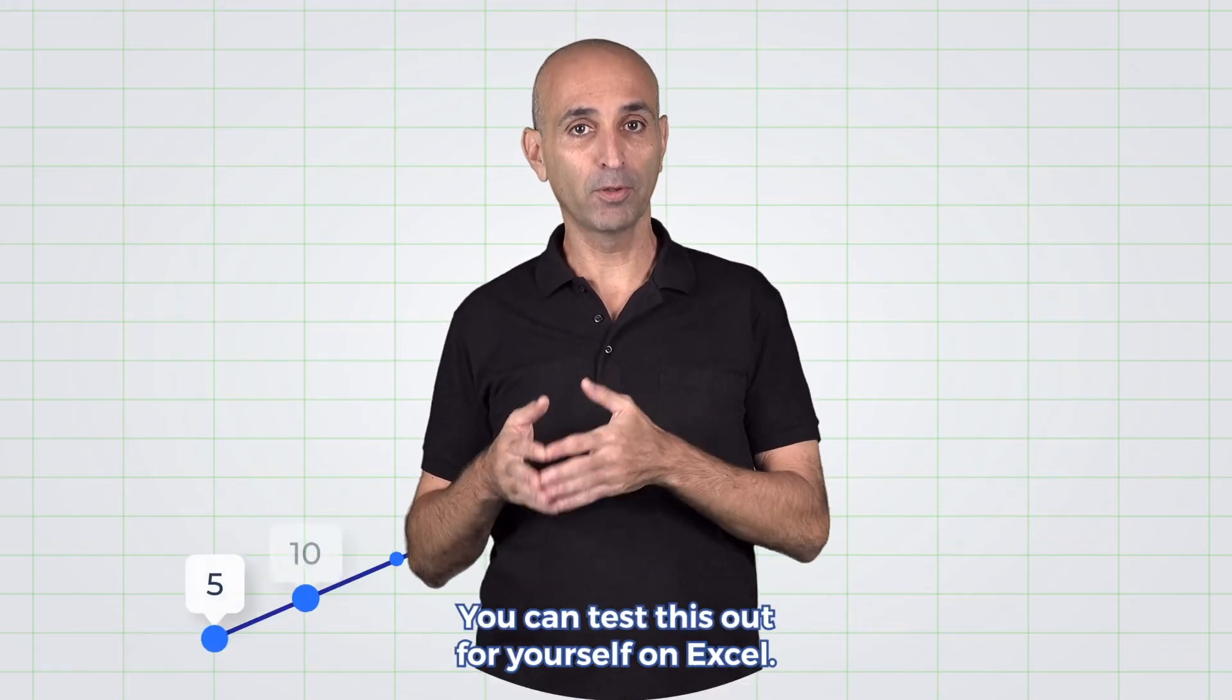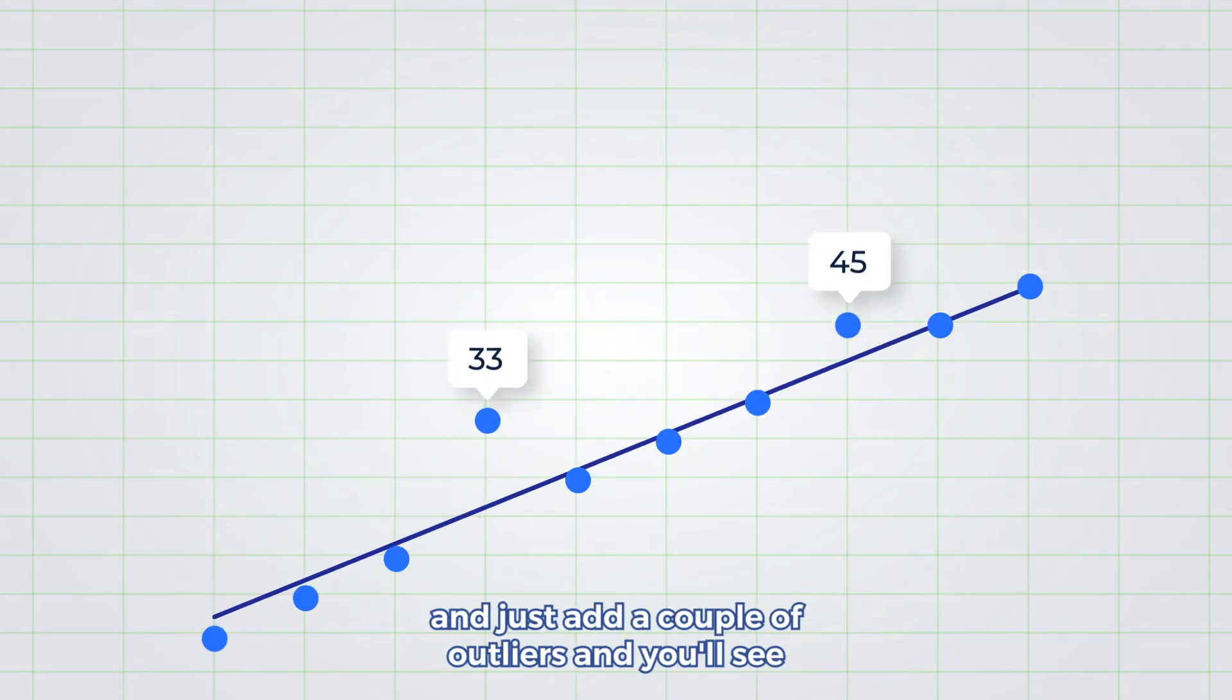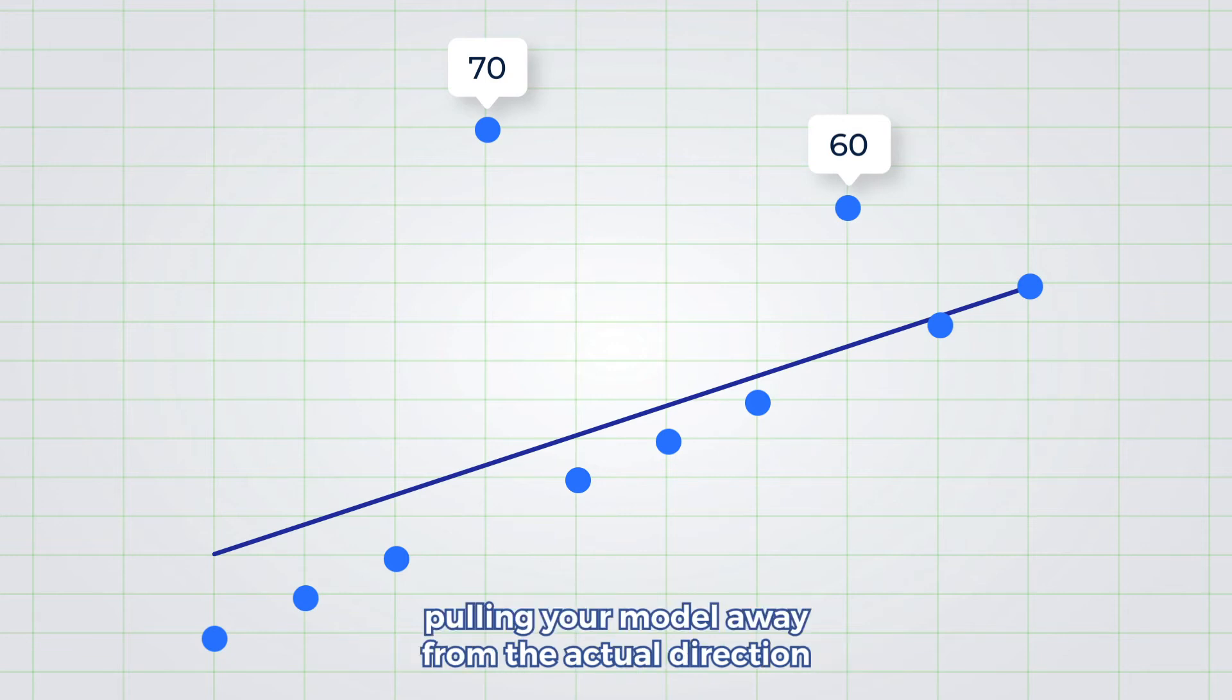You can test this out for yourself on Excel. Create a regression model with a strong linear relationship and just add a couple of outliers and you'll see that they skew the results completely, pulling your model away from the actual direction of the data samples.